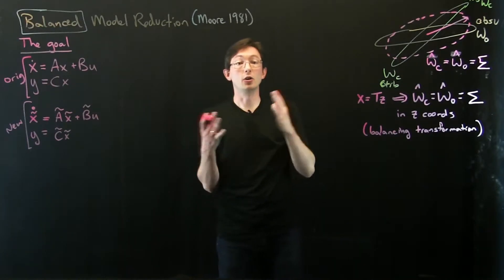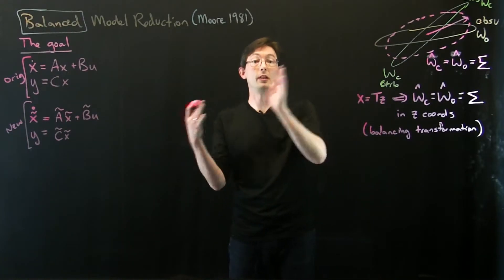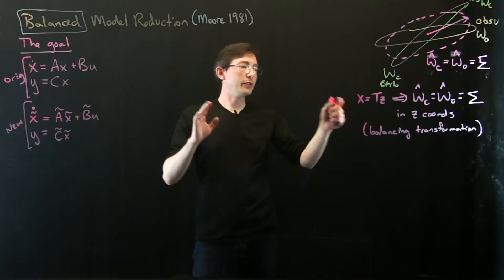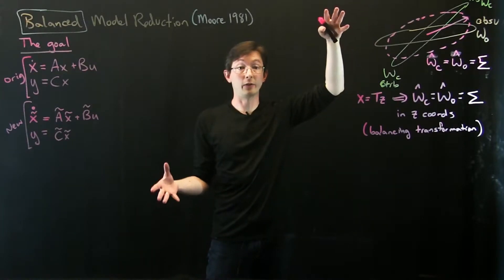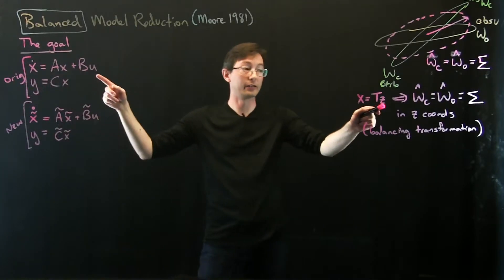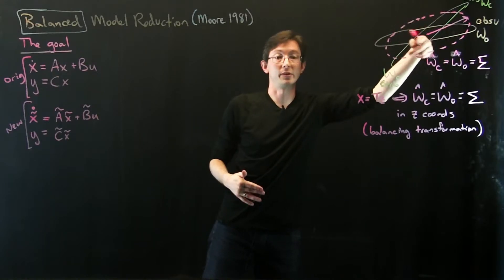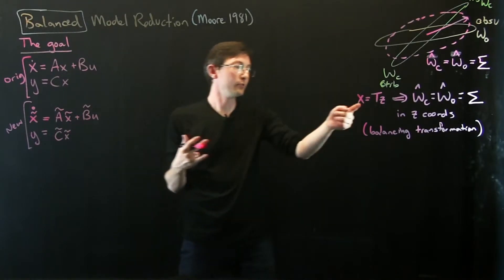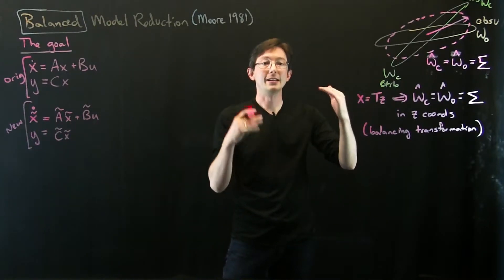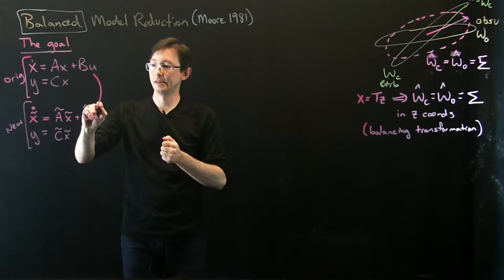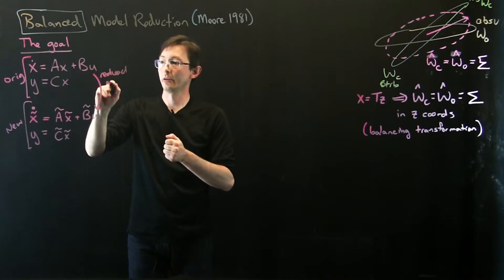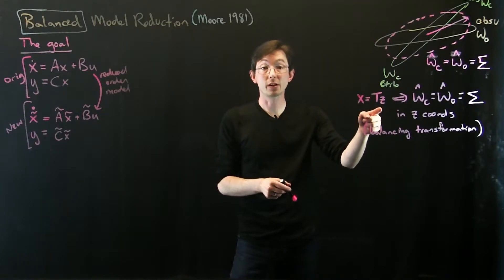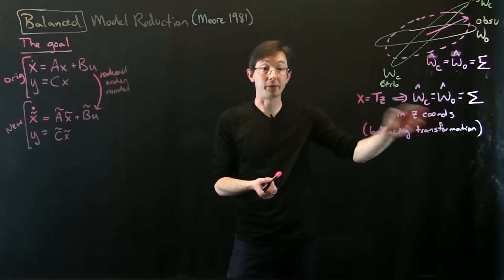These Z coordinates are somehow good coordinates that are jointly controllable and observable. Now, this T matrix is a big square n by n invertible matrix, so we don't actually get any savings by writing things in Z coordinates — it's just a better coordinate system where the inputs and outputs are more balanced. What Moore did in 1981 is he essentially used these Z coordinates to get a reduced order model, by picking the top most controllable and observable directions in Z and throwing away all of the rest.